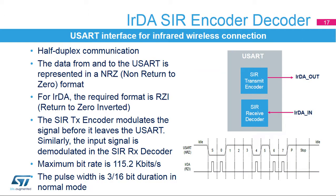The USART supports IRDA specifications, which is a half-duplex communication protocol. The data from and to the USART is represented in NRZ or non-return-to-zero format where the signal value is at the same level through the entire bit period. For IRDA, the required format is RZI (return-to-zero inverted), where a one is signaled by holding the line low and a zero is signaled by a short high pulse. The SIR transmit encoder modulates the NRZ transmit bitstream output from the USART. The SIR receive decoder demodulates the return-to-zero bitstream from the infrared detector and outputs the received NRZ serial bitstream to the USART. The USART only supports bitrates up to 115.2 kilobits per second for the SIR NDEC.